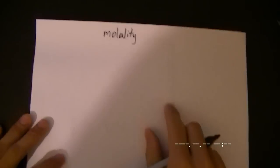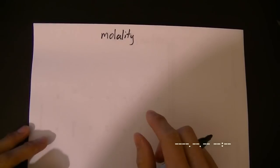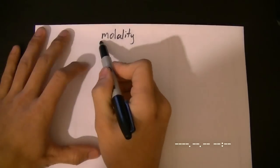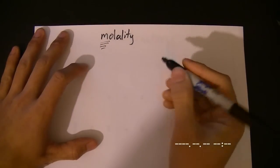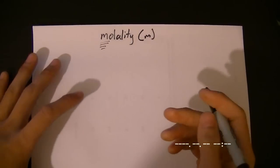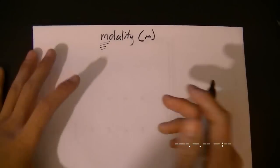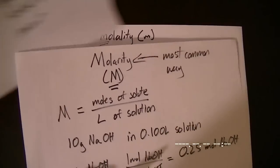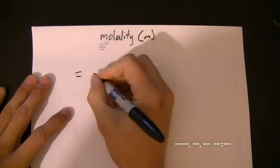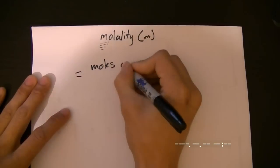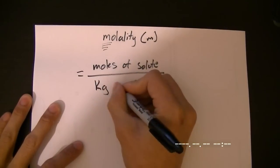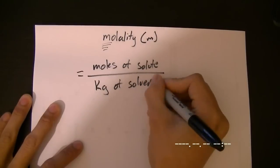The second way that is pretty common in terms of measuring the concentration—again, we're looking at the concentration of a solution—is through molality. Notice that I did not capitalize our M here. In this case, molality is represented by a lowercase m. It is not used as often as molarity. Molality and molarity sound very similar. A good way to remember it is that one has one L, another one has two L's. Molality is simply the moles of solute over kilograms of solvent.